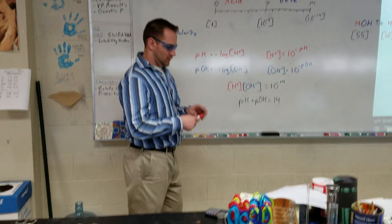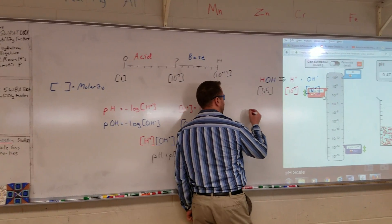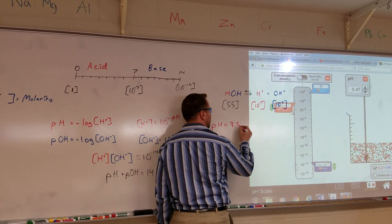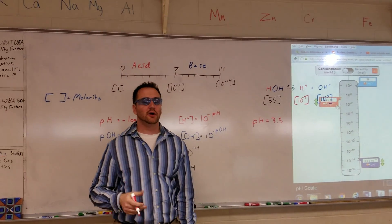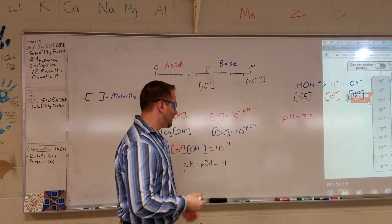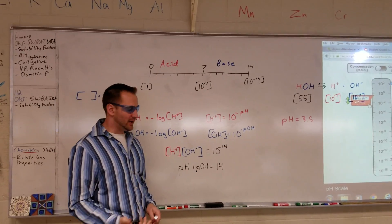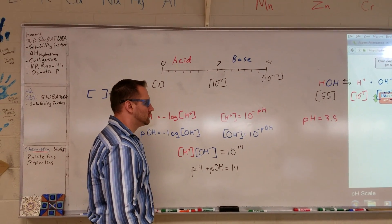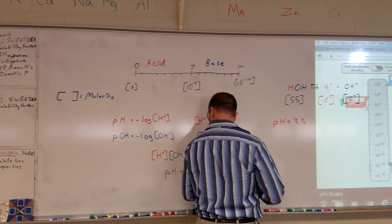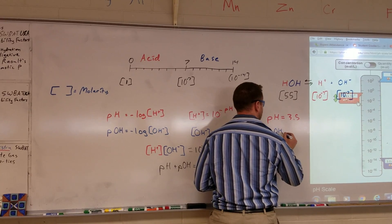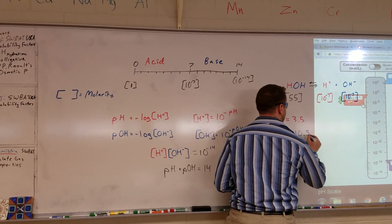Now, knowing that the pH is 3.5, I can figure out all the other ion concentrations as well. If pH is 3.5 and pH and pOH add up to 14, then the pOH is going to be 10.5.